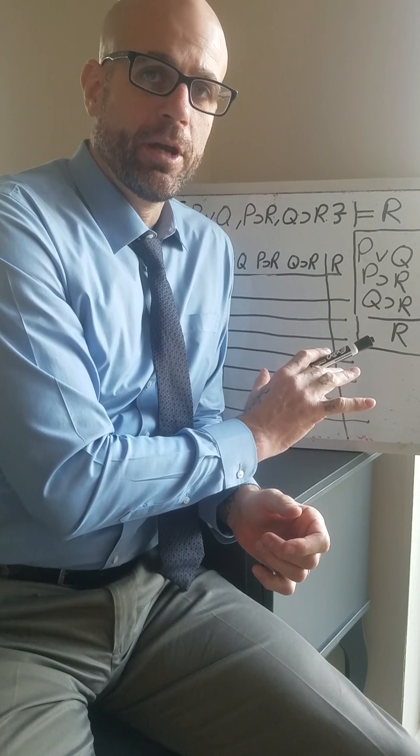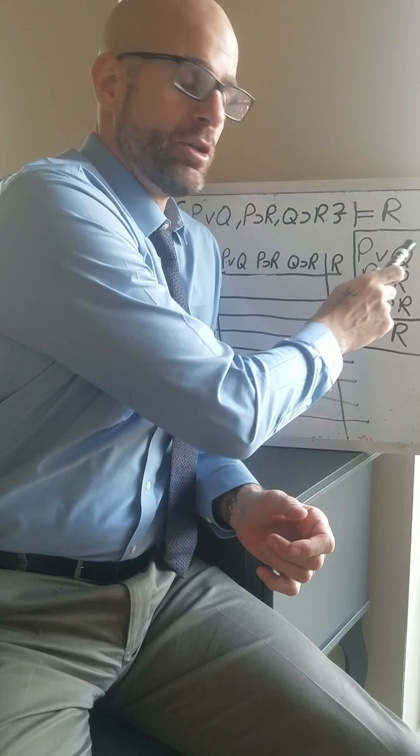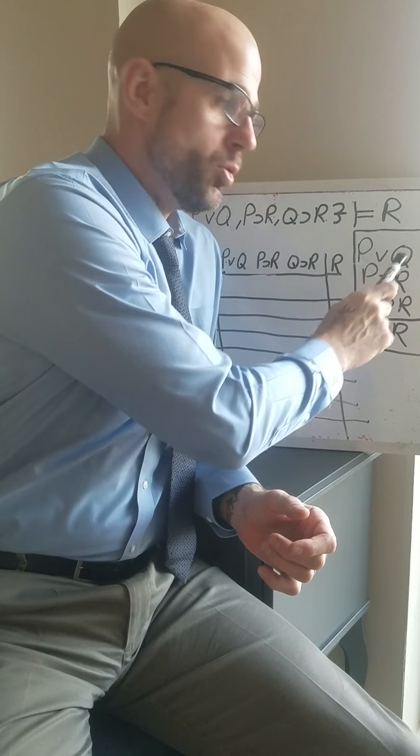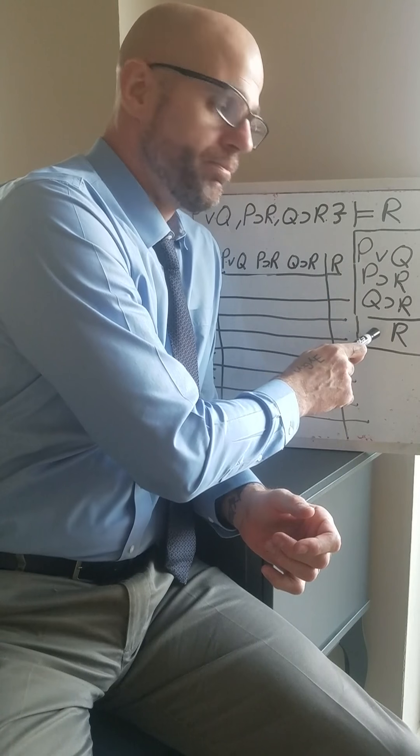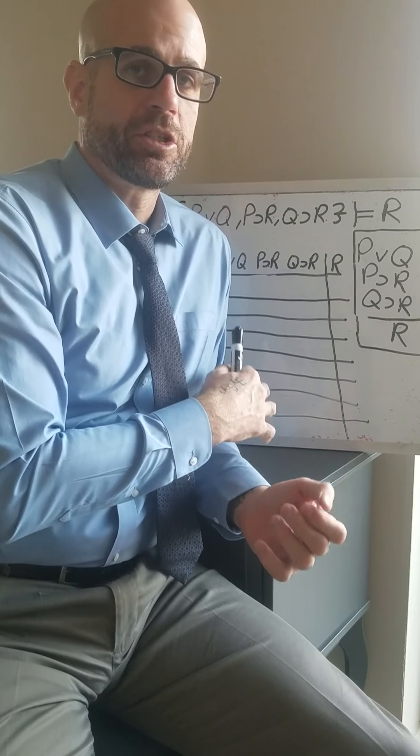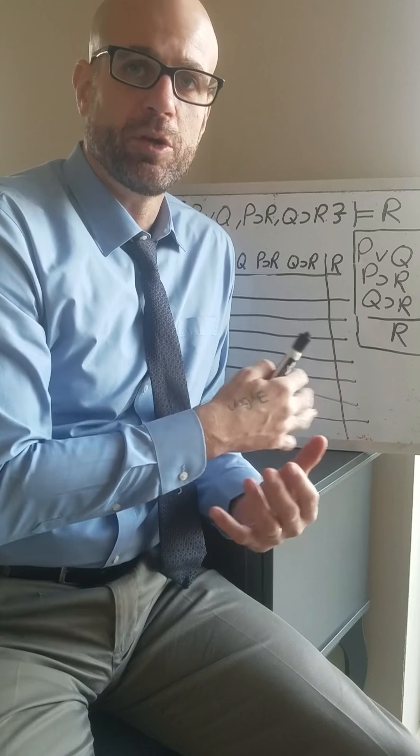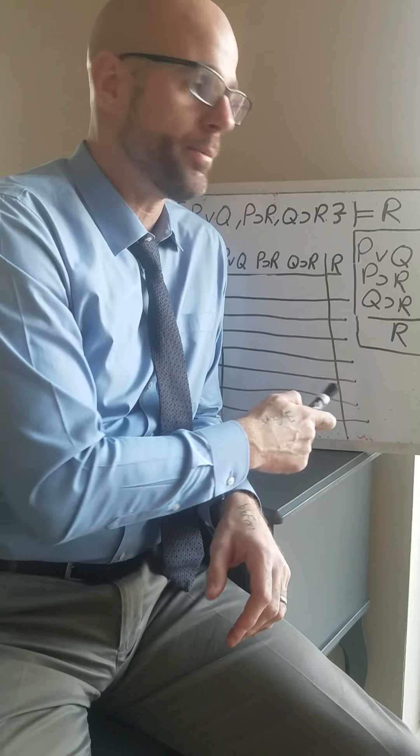So let's take a look at this argument that's here in standard form. This is a pretty simple and straightforward argument that I think you can see right away is valid. It says P or Q, if P then R, if Q then R, therefore R.